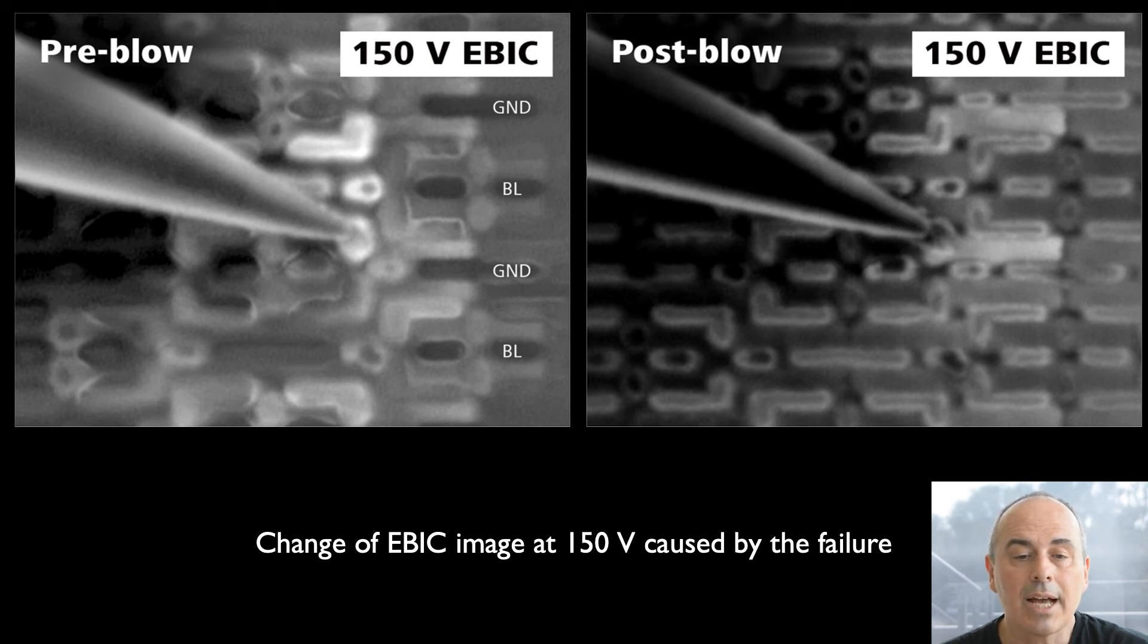Firstly, we see that after the blow, the gate contact lights up with less intensity, whereas the gate itself is much more visible than before the blow. In addition, before the blow, all the PFET contacts are brighter than the NFET contacts, especially the NFET ground contacts are dark. This applies to both the inverter ground labeled GND and the bitline ground labeled BL in the image.